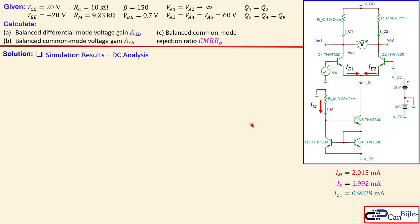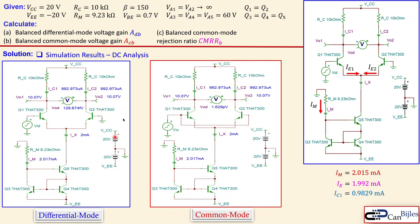Now let's look at the SPICE simulation results for the DC analysis. The left side is for differential mode and the right side for common mode. The simulation gives Im = 2.070 mA compared to our calculated 2.015 mA — very close. The tail current Ix = 2 mA versus our 1.992 mA. Ic1 and Ic2 are exactly equal at approximately 0.993 mA each, confirming the tail current splits into two equal pieces.